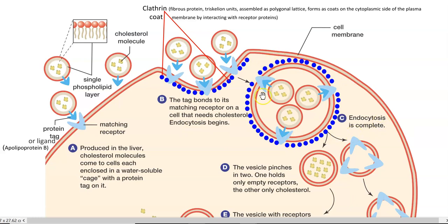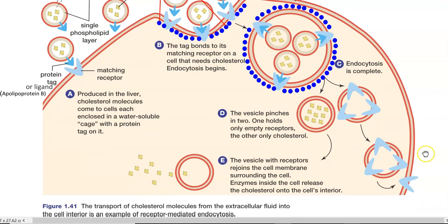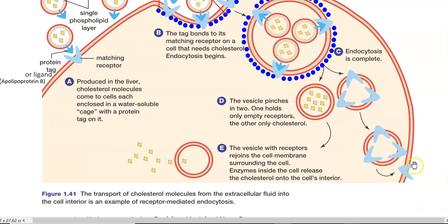Looking at point C: endocytosis has been completed. The cholesterol molecules are all taken inside the endocytosis vesicle. Due to differences in pH inside the cell, the vesicle containing the cholesterol molecule pinches into two — one holds the completely empty receptor, whereas the other is full of cholesterol molecules. The empty receptors are further recycled back to the membrane, where they again attach to the surface and help in taking up more protein-tag-containing cholesterol molecules inside.